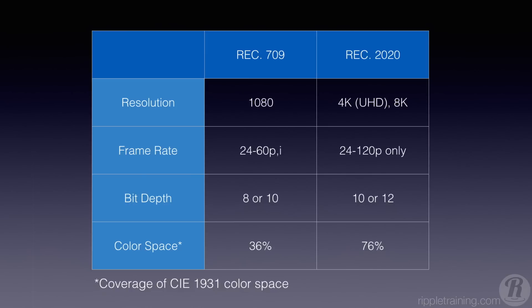So that's four times the size of 1920 by 1080 — 3840 by 2160. There's a separate spec for that which includes resolution of either 4K or 8K, frame rates that are progressive only, bit depth of 10 or up to 12, and a color space that is a significantly higher percentage.